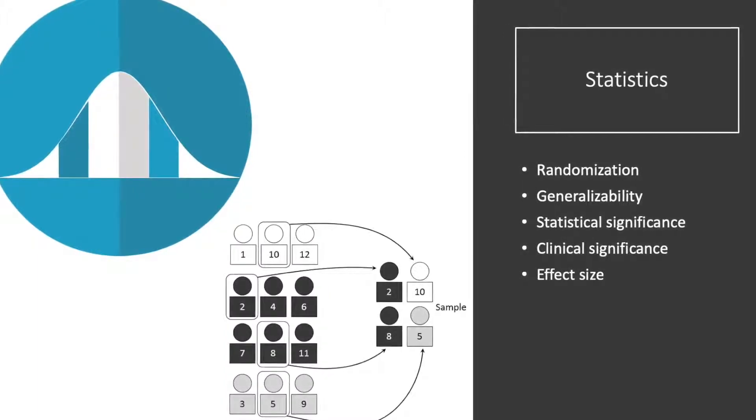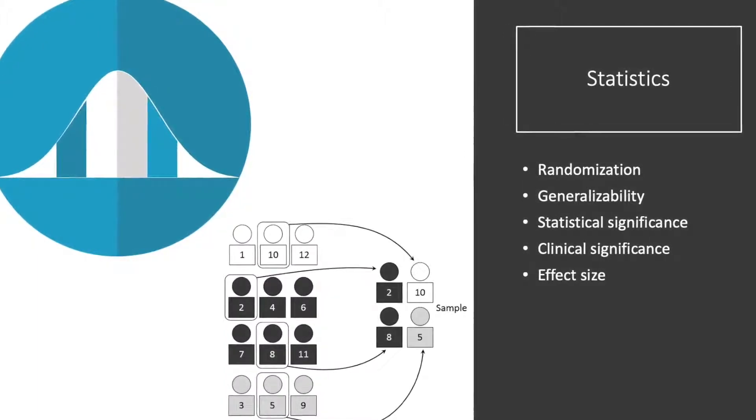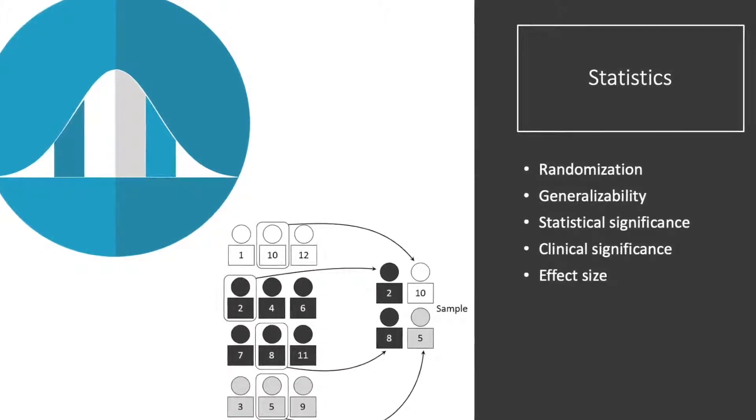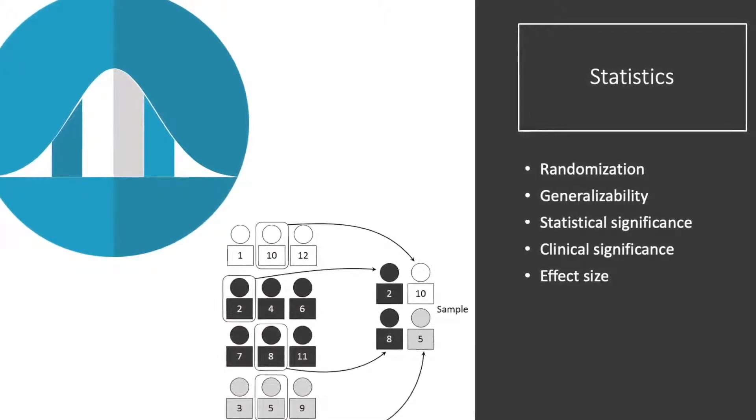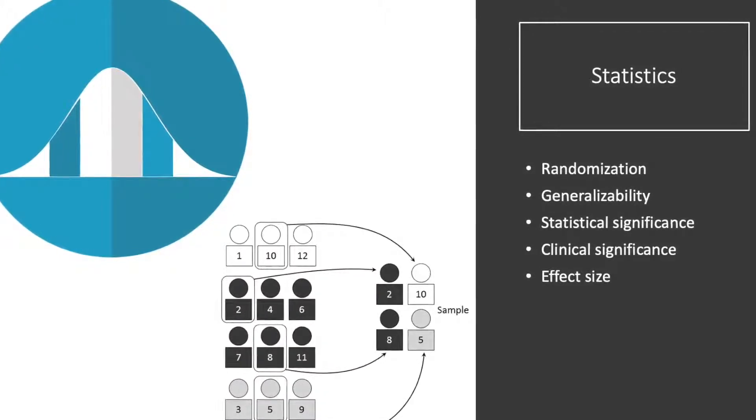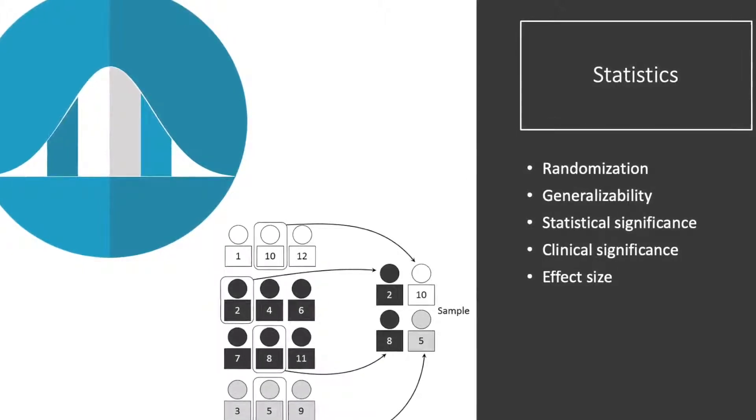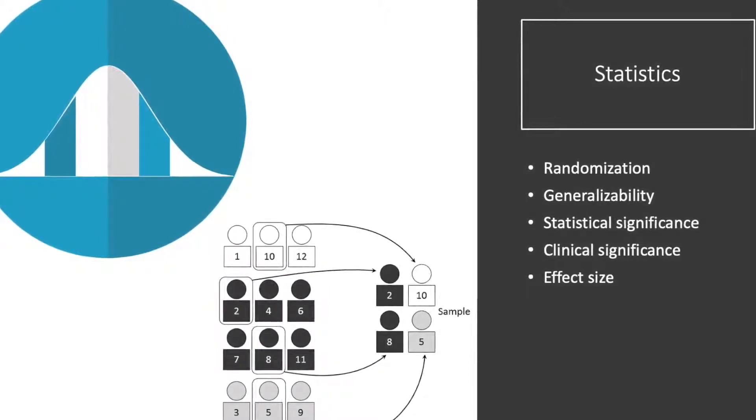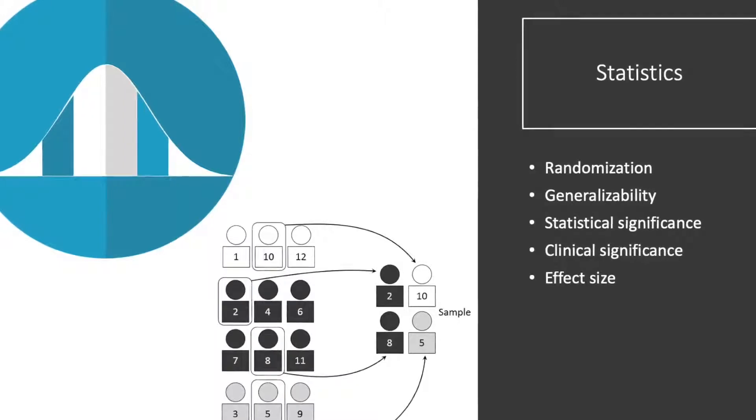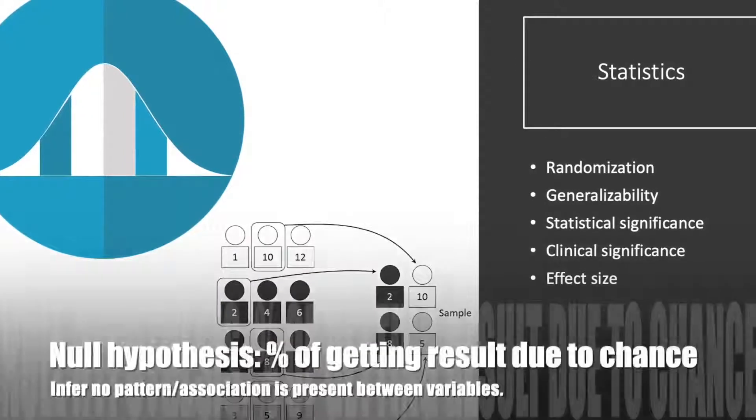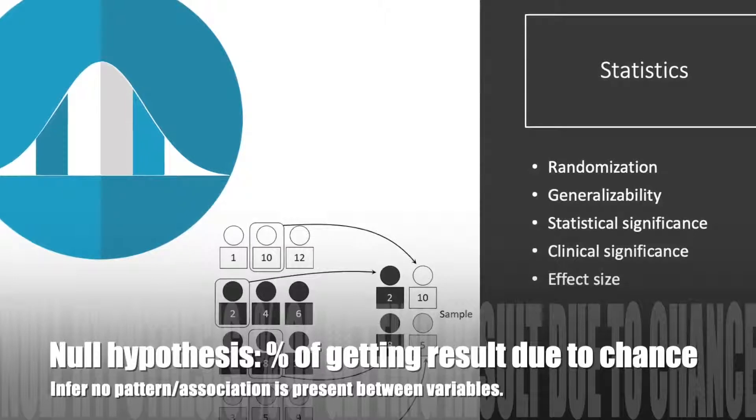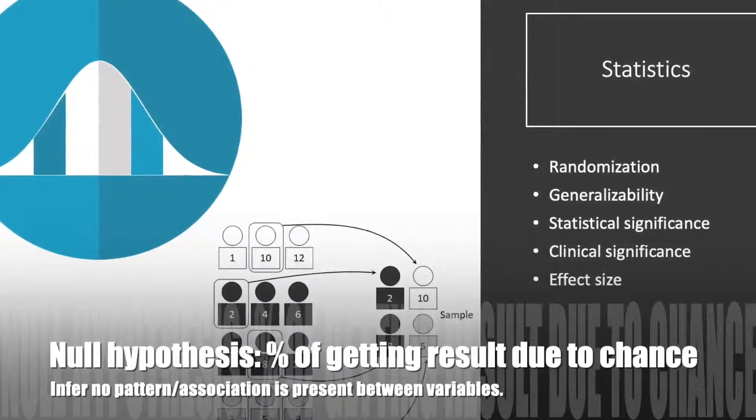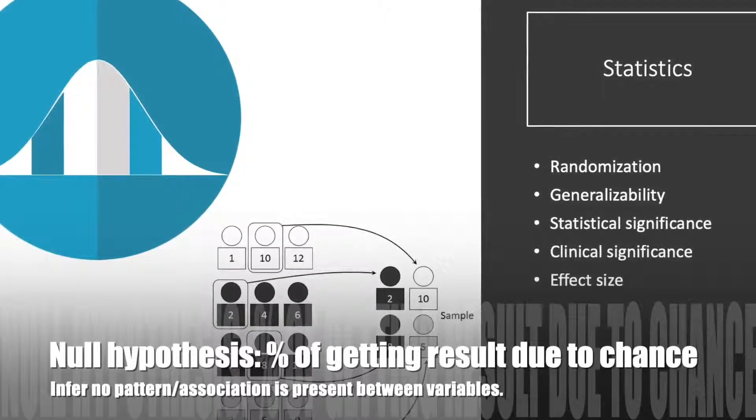Statistical significance is a mathematical calculation about a certain difference between groups. It could be assigned as a p-value, probability value of 0.05 in which you have a 5% chance of getting this discovery if the null hypothesis is true or a 1% chance if the p-value is 0.01.